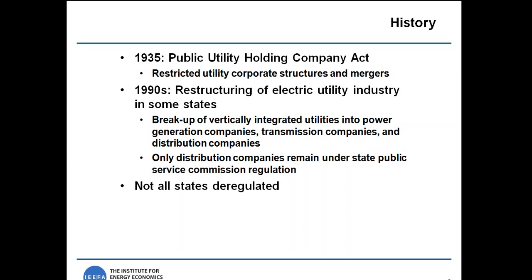This began to change with the deregulation of the electric utility industry in the 1990s. In states that deregulated, the vertically integrated utilities were split up so that the power generation, transmission, and distribution functions were owned by three different companies. The California electricity crisis highlighted early problems with deregulation as companies like Enron were able to speculate in the power markets and drive up the cost of power, ultimately costing consumers tens of billions of dollars. This effectively put a freeze on electricity deregulation around the country.